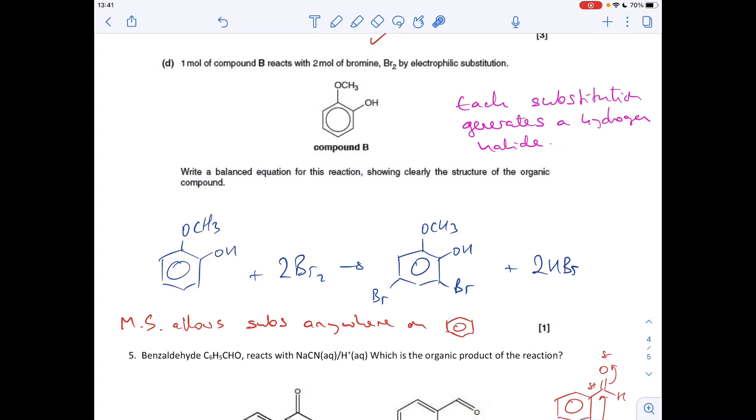Moving on to the final part of this question, part D. One mole of compound B reacts with two moles of bromine by electrophilic substitution. I've written there, each substitution generates a hydrogen halide. So every time you take a hydrogen off the ring and put one of those bromines on, you make a hydrogen halide. So because there's two moles involved in the reaction, we're going to get two substitutions, two hydrogen halides. So that's how the equation works. The mark scheme allows substitution anywhere on the benzene ring. I've put them there and there, but you could have just put them there and there if you'd wanted.